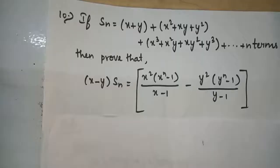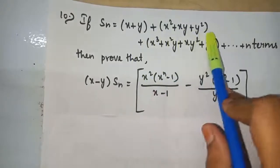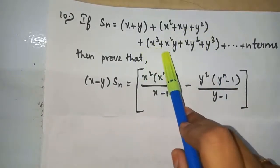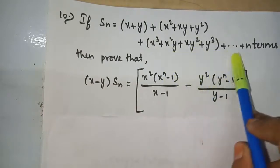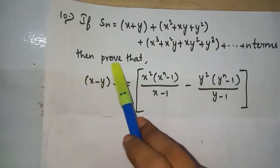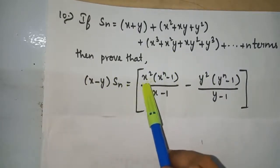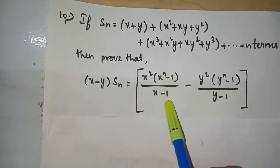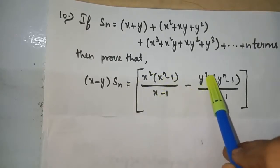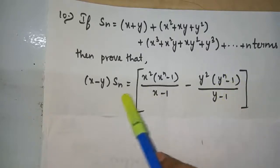Problem 10: If Sn = (x + y) + (x² + xy + y²) + (x³ + x²y + xy² + y³) + ... up to n terms, then prove that (x − y) × Sn = [x²(x^n − 1)/(x − 1)] − [y²(y^n − 1)/(y − 1)].